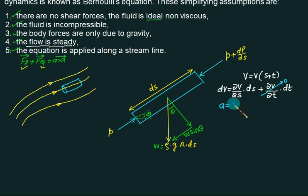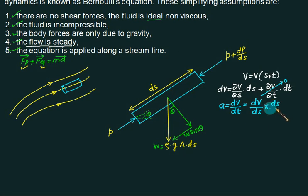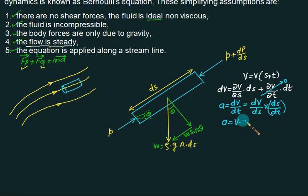With steady flow, the total acceleration reduces to dv/dt, which equals (dv/ds)(ds/dt). Since ds/dt is the velocity v along the streamline, the acceleration a equals v times dv/ds. Now we have Fp, Fg, mass, and acceleration all defined, so we can substitute and solve to get the Euler equation.